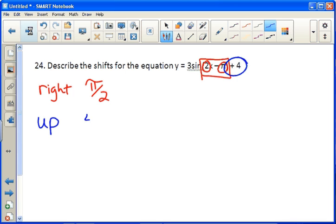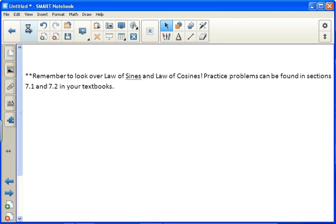And the only thing not on this review sheet is the law of sines and cosines. We did a lot of that in class, so I didn't want to make you do extra for this. But if you need more practice, you can do the odd ones in 7.1 and 7.2 in your textbook.